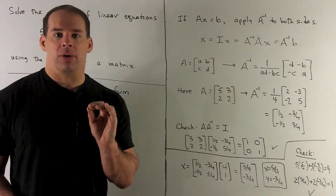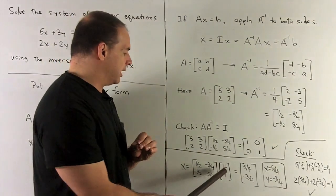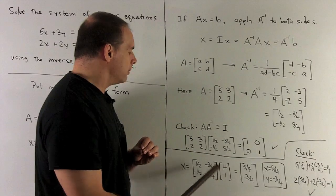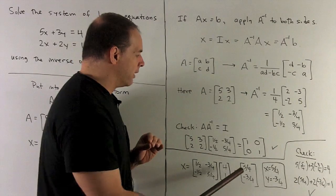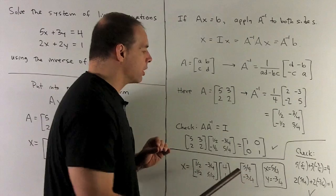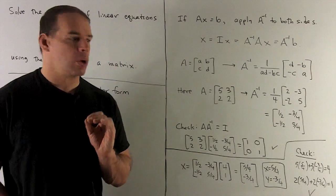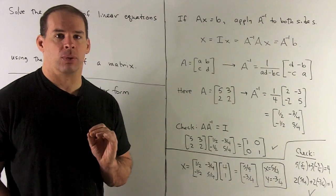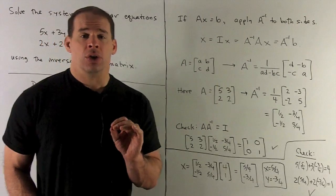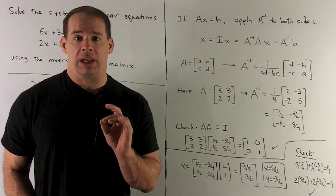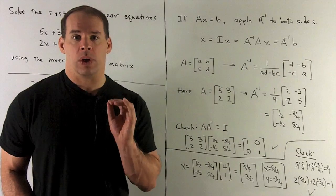Now we go and find x, which is A inverse times b. Our b is 4 and 1. When you work it out, you get 5 fourths and minus 3 fourths. So x equals 5 fourths and y equals minus 3 fourths. If there's time, go back and check your answer by substituting x and y into the original equations.